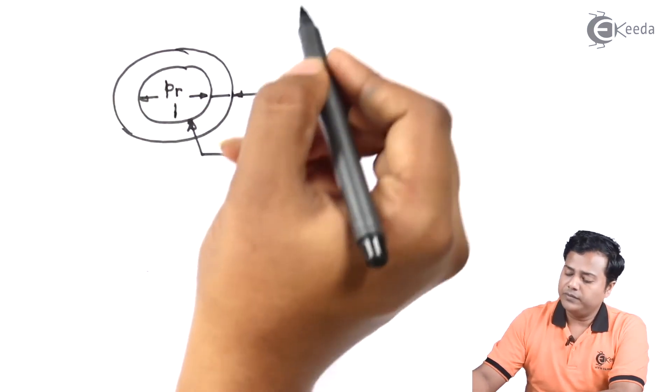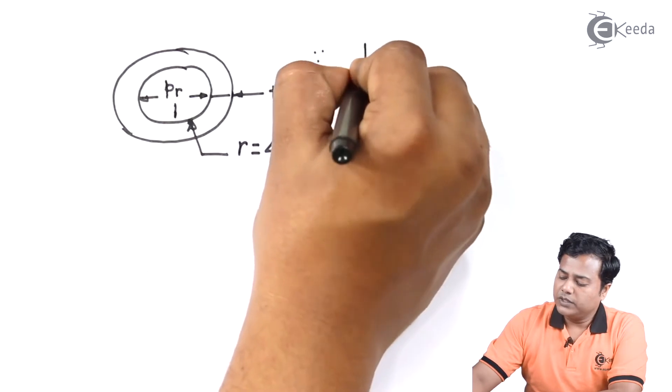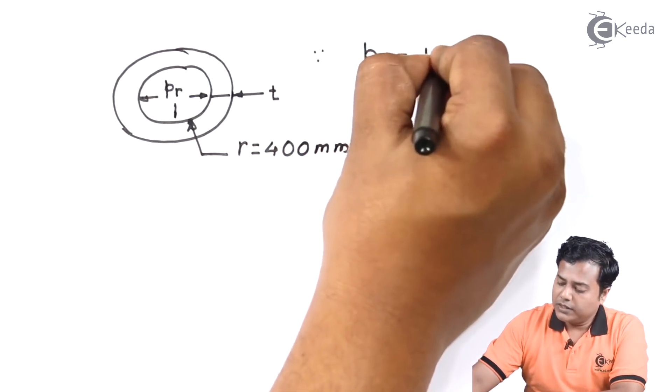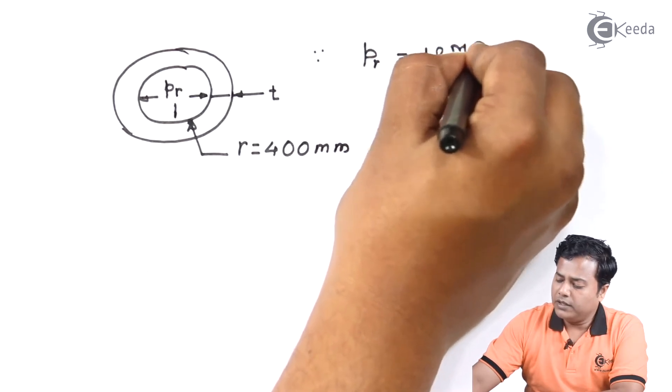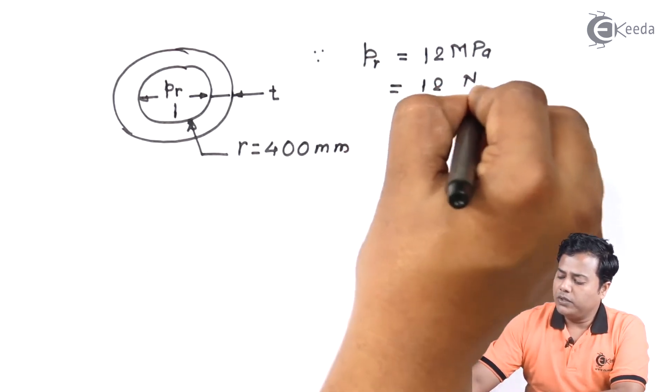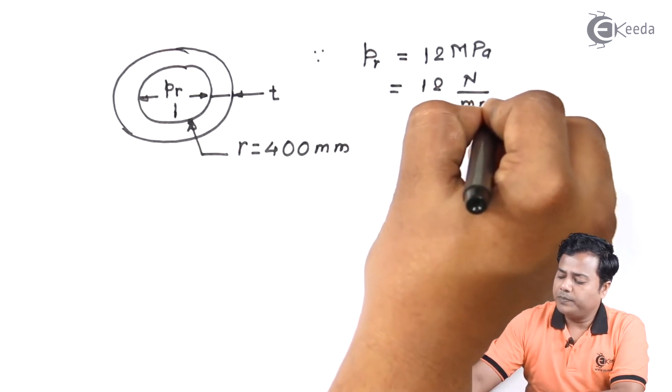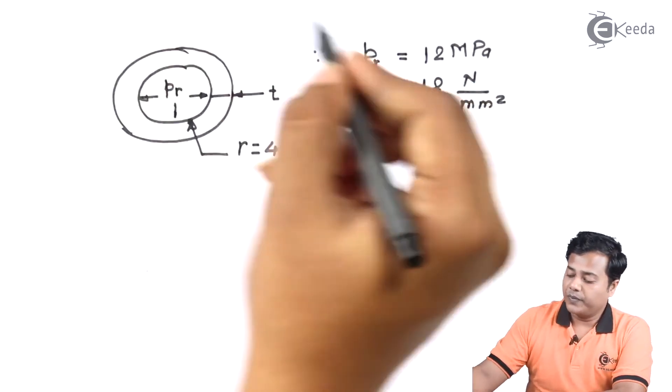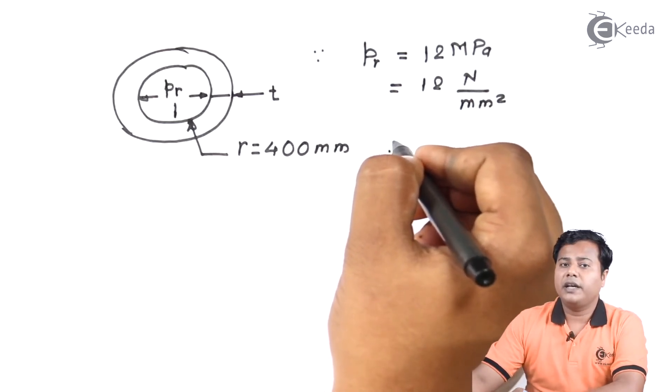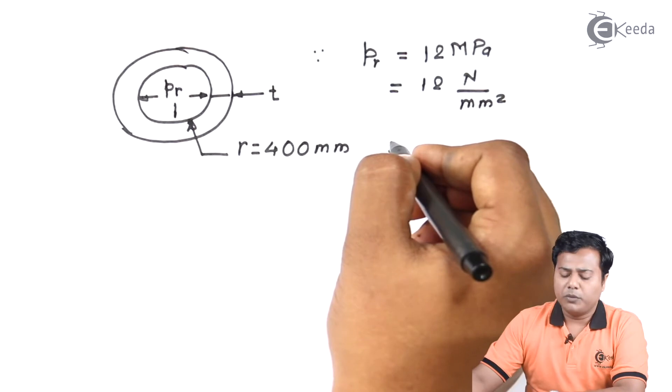So, p_R given is 12 megapascal, that makes it 12 Newton per mm square. We also have been given the maximum stress that the material can carry. So, it is a kind of material property.